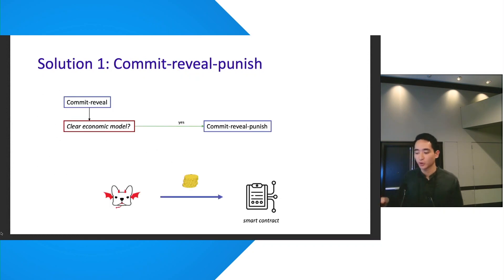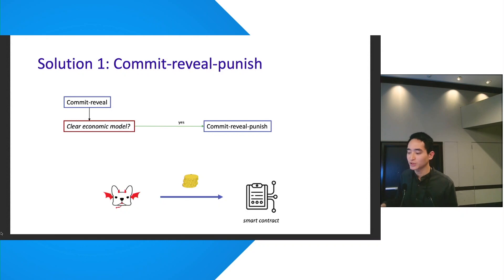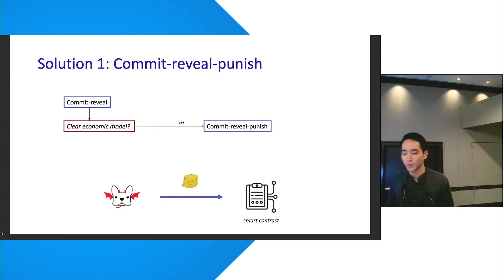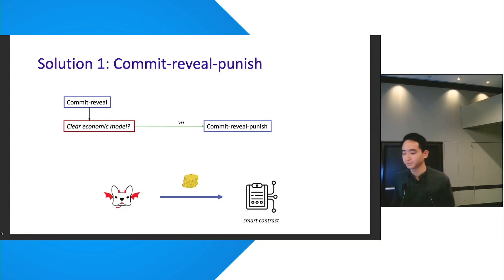For the rest of the talk, we'll follow a simplified flowchart of DRBs stemming from commit-reveal. The first question is: do we have a clear economic model? If the value of manipulating the beacon output can be clearly modeled, we can leverage a class of protocols called commit-reveal-punish, based on financial incentives and penalties. Participants stake financial value — such as cryptocurrency in a smart contract — which can be slashed if they deviate. If one has more to lose than to gain, we have a security argument for rational adversaries.